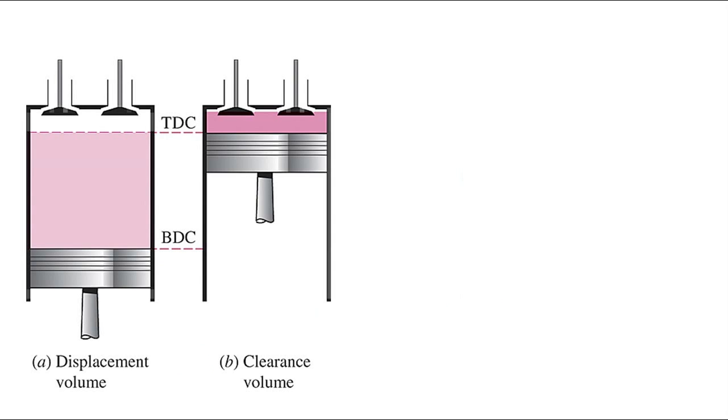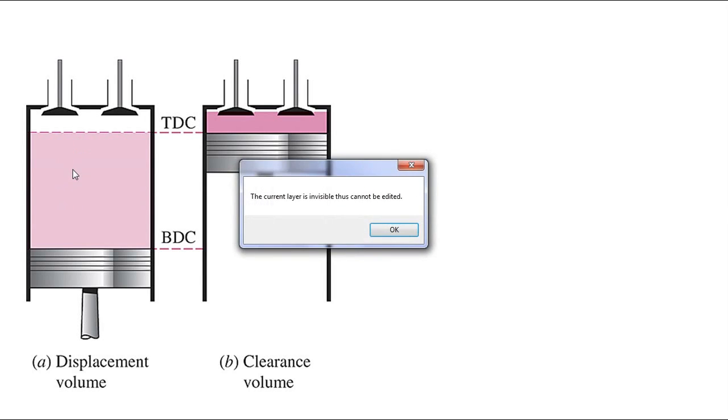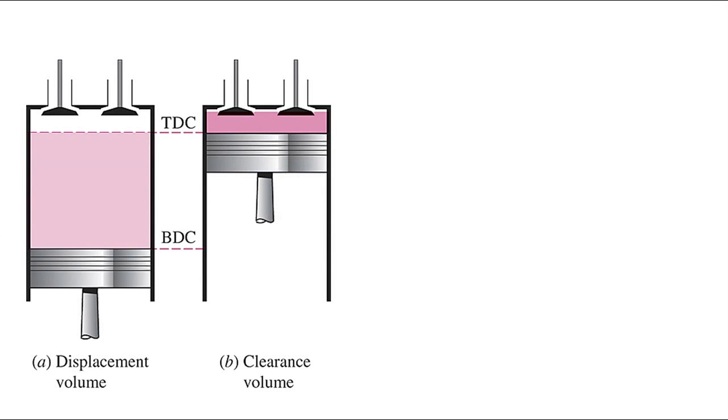Here's showing the volumes inside the cylinder. The displacement volume is the volume that is displaced as the piston moves from BDC to top dead center. The clearance volume is the volume left inside the cylinder when the piston is all the way up at TDC. We can calculate what the displacement volume is here from the bore and from the stroke.